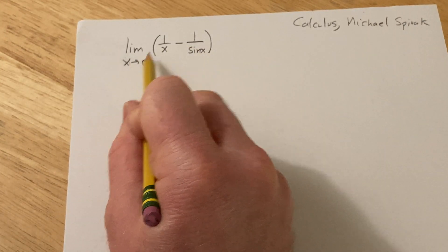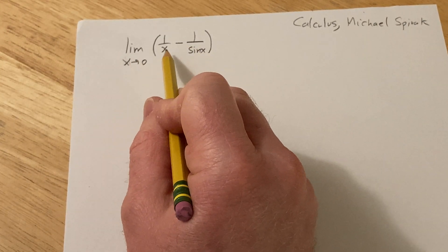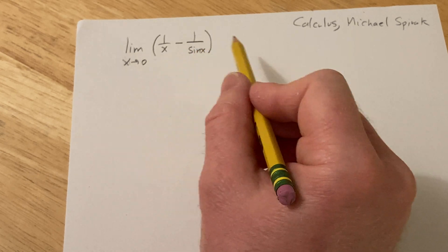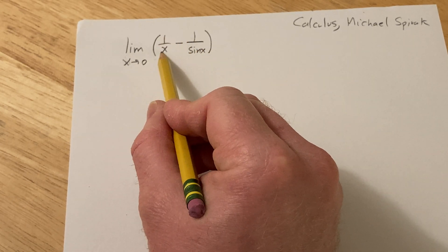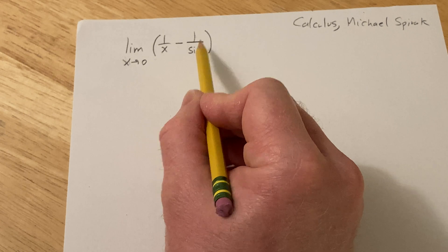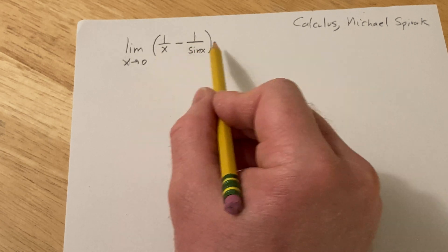And basically if you plug in 0, which is the first thing you're supposed to do when evaluating limits, you get 1 over 0 here and you get 1 over sin 0, which is 0, so it's 1 over 0 here. So none of this makes sense.